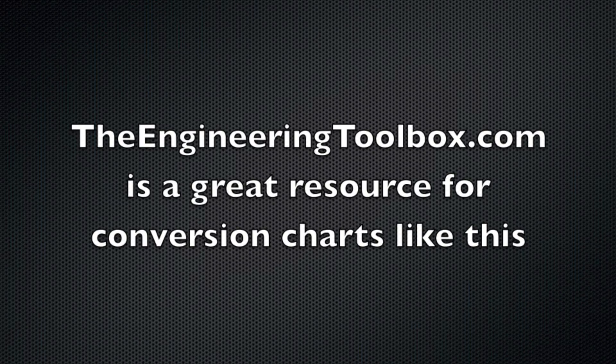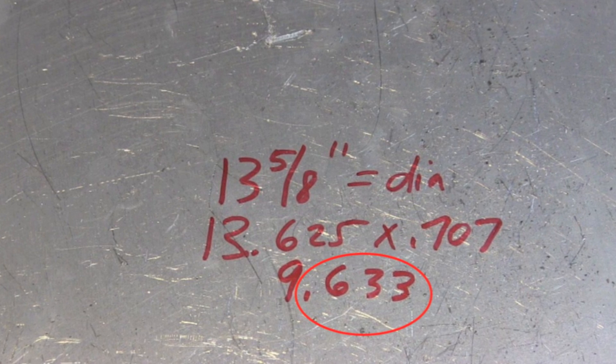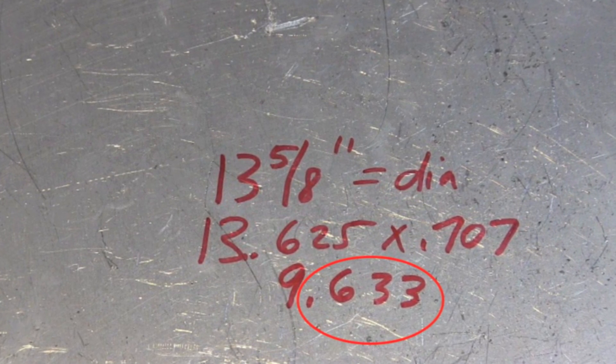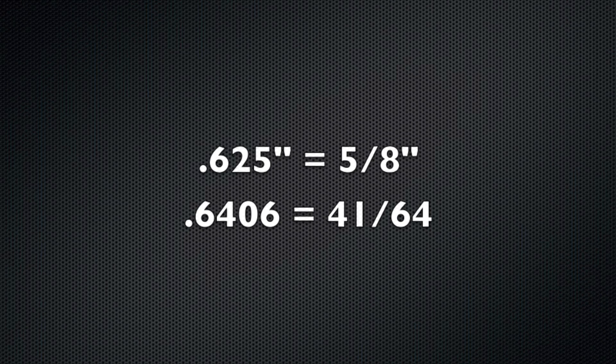But these days it's just a lot easier to pull out my phone and go somewhere like the engineering toolbox dot com. They got charts for things like that. So that dimension I would need to convert back to a fraction, 0.633. I went to the chart. Actually closest thing to it is 5 eighths so I'm just going to go with that dimension.